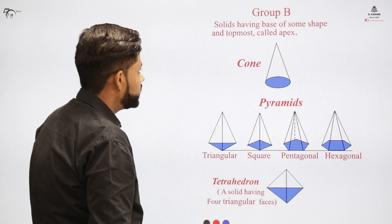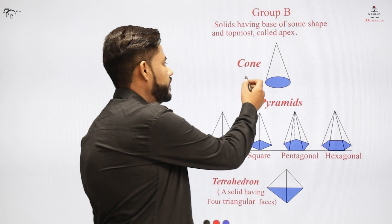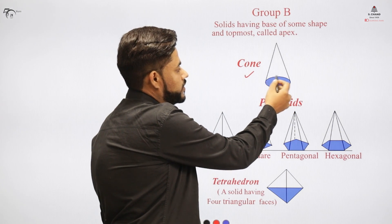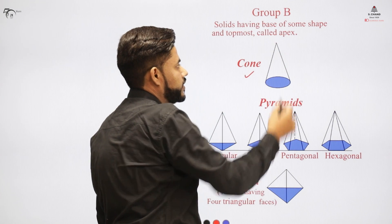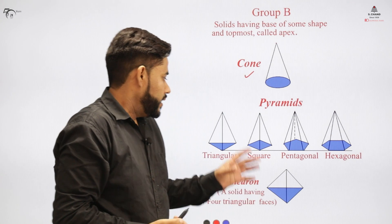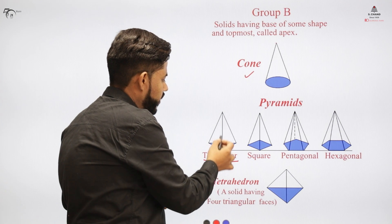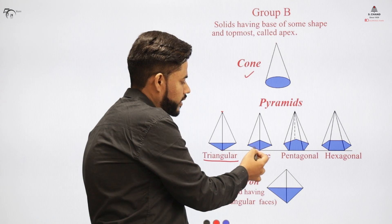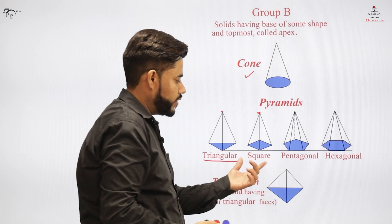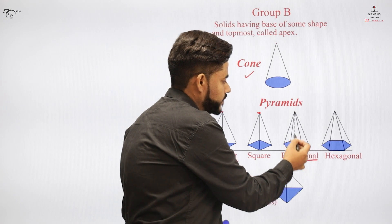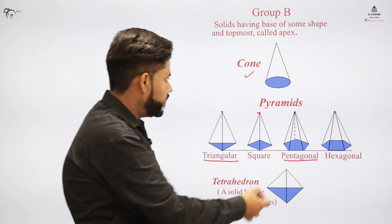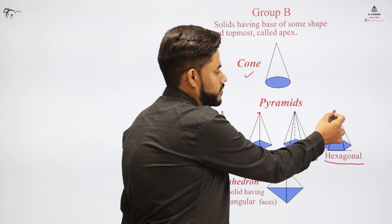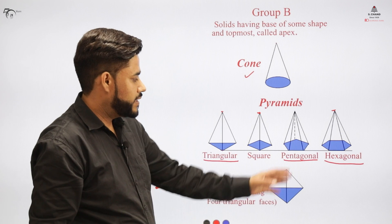The second category, Category B, is called a pyramid. The example given was a cone, which has a circular base, and if we join all points on the circle to the topmost apex point, we get a cone. For pyramids: if the base is triangular and we join all the vertices to the apex, we get a triangular pyramid. If the base is square, we get a square pyramid. Similarly, a pentagonal base gives a pentagonal pyramid, and a hexagonal base with all points joined to the apex gives a hexagonal pyramid.